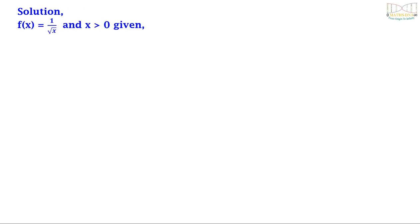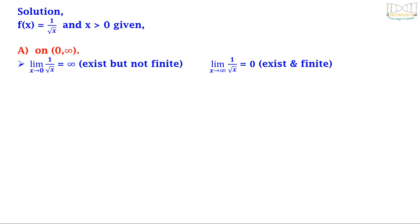Solution. It is given that f(x) = 1/√x and x > 0. For option A, on the open interval (0, ∞): the limit as x tends to 0 of 1/√x equals infinity — it exists but is not finite — and the limit as x tends to ∞ of 1/√x equals 0, which exists and is finite. Since the limit as x tends to 0 is not finite, the function is not uniformly continuous on this interval.